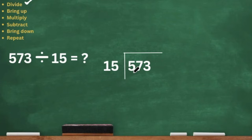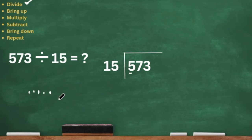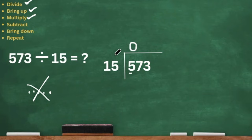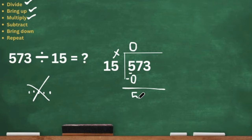So first we're going to start off by dividing. Our divisor is 15. We take the first digit in our dividend, which is 5. We're going to draw 5 dots and see how many groups of 15 we can get out of that. If we only have 5, can we get a group of 15 out of that? Nope — it is not enough, so that means it's zero. We cannot get any groups of 15 out of 5. We brought up the zero. Now we multiply — zero times 15 is zero. So 5 minus 0 is 5. We bring down the 7. Now we have 57.